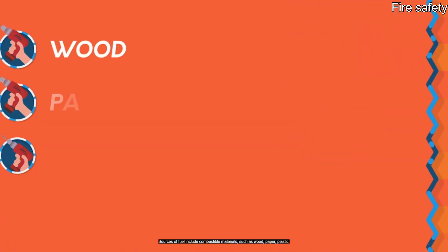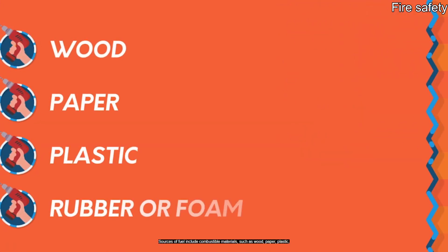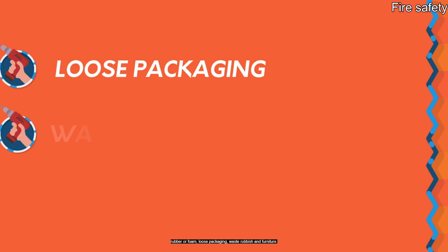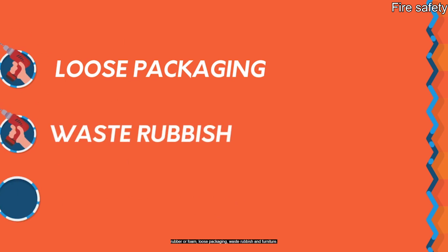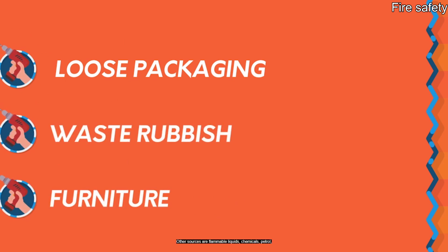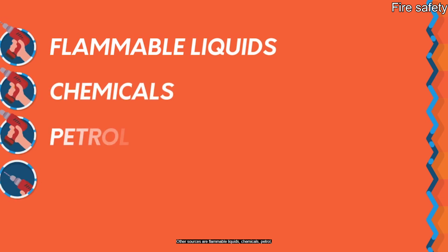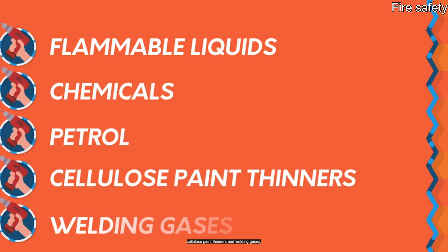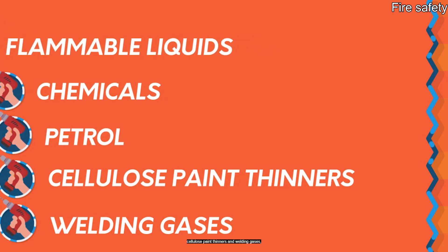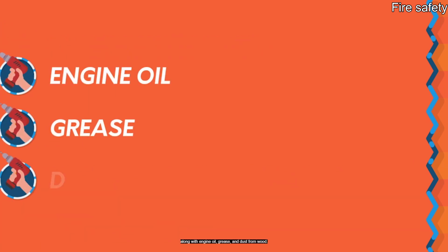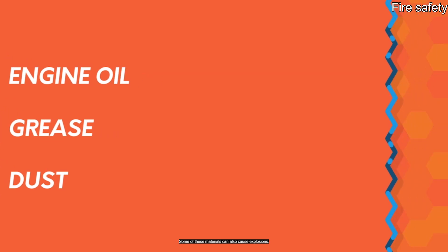Sources of fuel include combustible materials such as wood, paper, plastic, rubber or foam, loose packaging, waste rubbish and furniture. Other sources are flammable liquids, chemicals, petrol, cellulose paint thinners and welding gases, along with engine oil, grease and dust from wood. Some of these materials can also cause explosions.